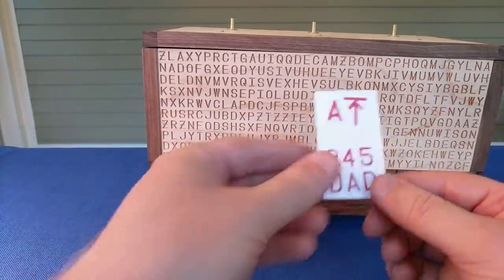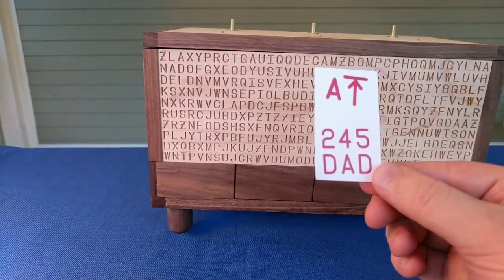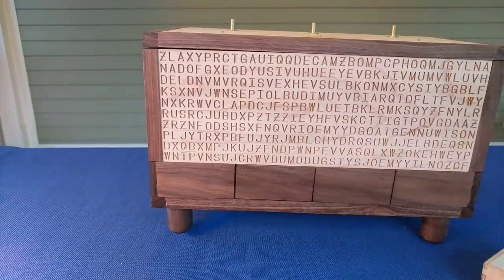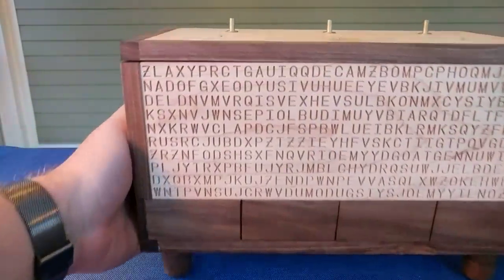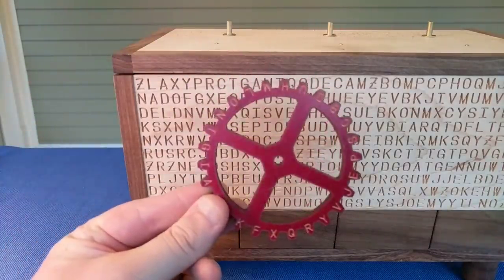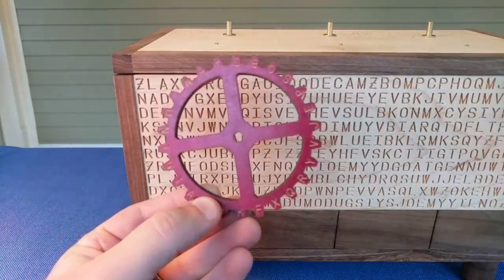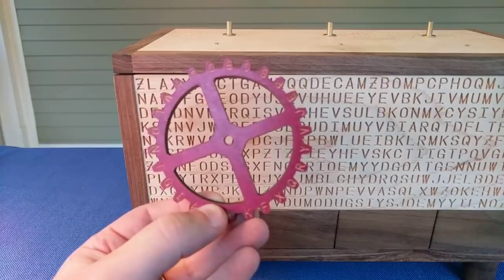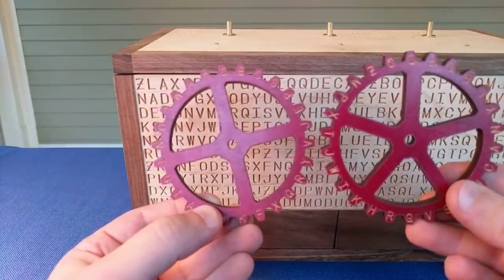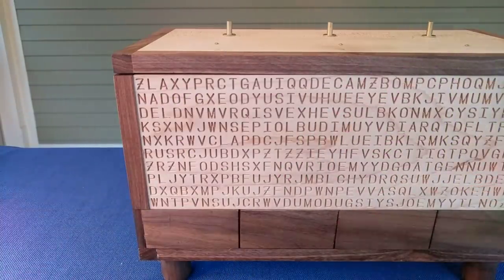And on the back, it's got another note, 245 Dad. So I made him figure this out. But the box also came with three gears. You can see that those have the letters of the alphabet on them in a random order. Same with this one, but a different order. And a third one.